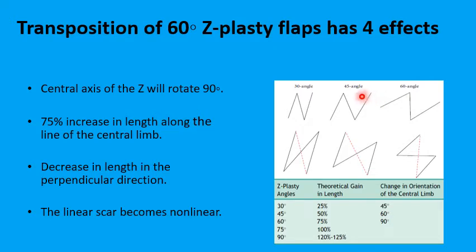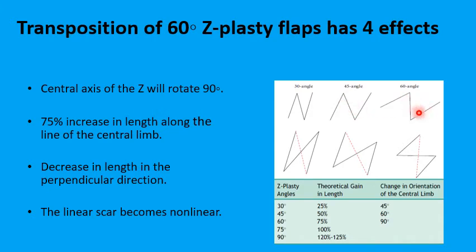At 45 degrees, you can achieve a 50% increase in length and a 60-degree change in direction. The smallest angle you can use is 30 degrees, because below that you risk the viability of the flap tips. At 30 degrees you gain a 25% increase in length and a 45-degree change in direction. So depending on the angle chosen for the two triangles, you can change direction, lengthen the scar, and end up with a non-linear scar whose lateral limbs can lie better along the relaxed skin tension lines.